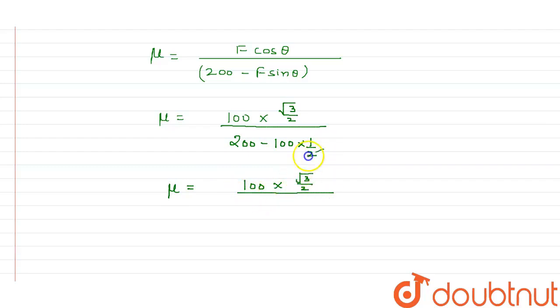So if I evaluate it, you will get μ equals 100 into root 3 by 2, divided by, this will cancel out and this will become 200 minus 50, that is 150.